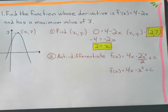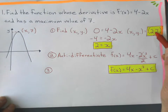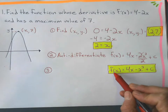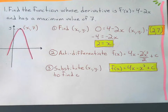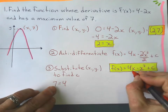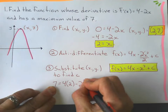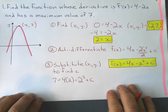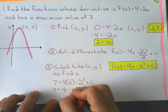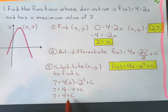The third step is to substitute the point x1, y1 into our formula to solve for the constant. Remember, f(x) is the same as y, so that's going to be 7. So: 7 equals 4 times 2, minus 2 squared, plus c. Simplifying: 7 equals 8 minus 4 plus c, so 7 equals 4 plus c, and c must equal 3.